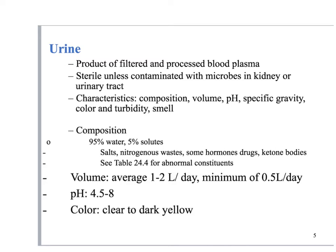Color and turbidity — color ranging from clear to dark yellow, almost a golden color — is indicative of hydration status. Turbidity is whether the urine is cloudy or not. Proteins, white blood cells, and bacteria will make the urine cloudy.